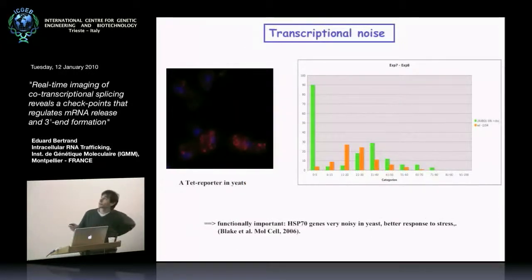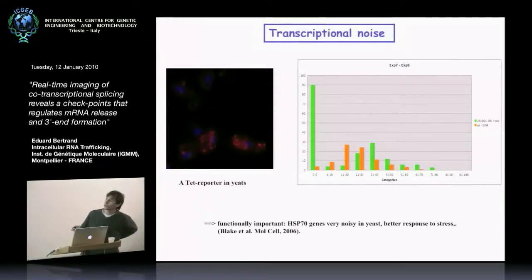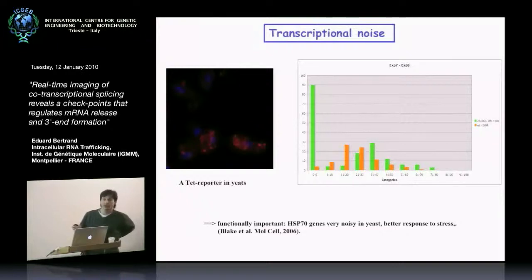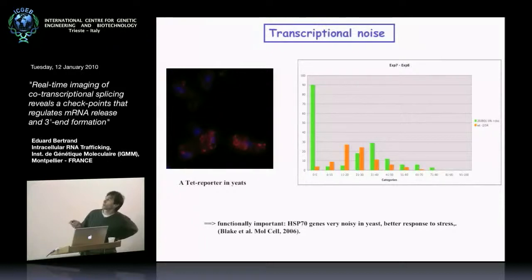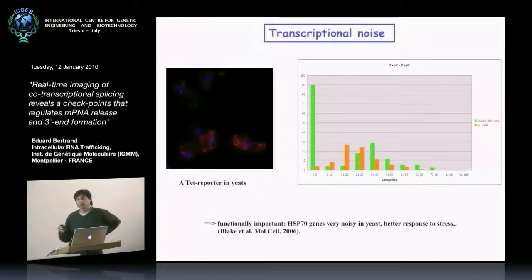We know this is important because it has given rise to the notion of transcriptional noise. If you take yeast cells with a reporter stably integrated and expressed under a TET promoter, you can see by in situ hybridization individual molecules of mRNA — some cells have a lot of mRNA and others have little or none. You don't get the same expression level from different cells in the population, and the protein content of these cells will be different as well, affecting cell physiology.